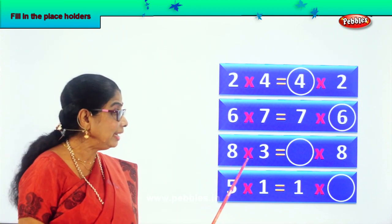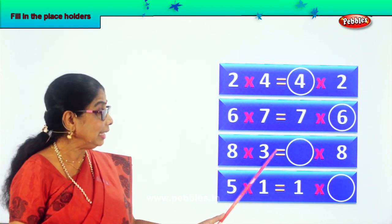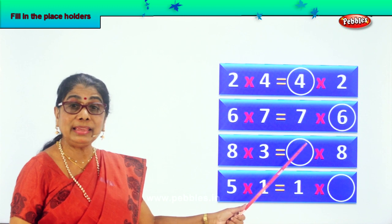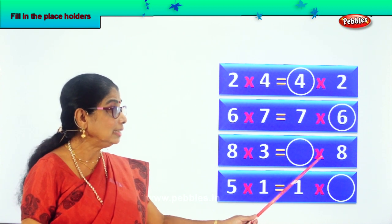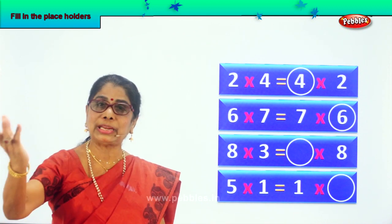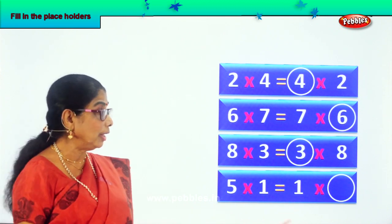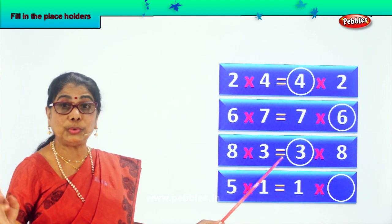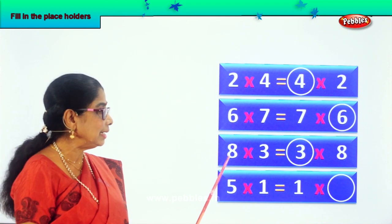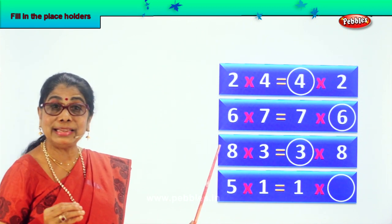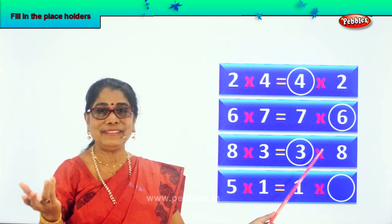Here you have 8 into 3. What is 8 into 3? 8 threes are 24. Equal to — remember, the answers are the same. 8 into 3 is 24. So dash into 8 has to be 24. It has to be 3 only. Very good. 8 into 3 is equal to 24, and 3 into 8 is also 24. So both sides the numbers are simply reversed. 8 into 3 is equal to 3 into 8.